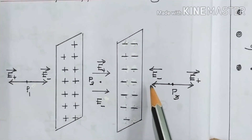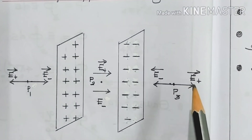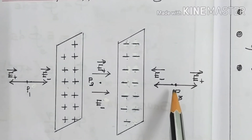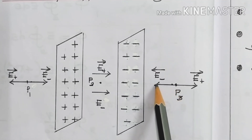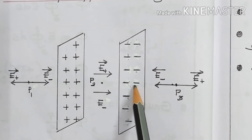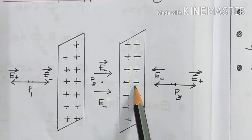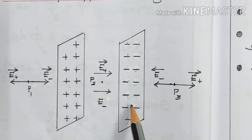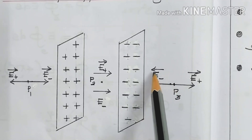Similarly, in the case of P3, the electric field due to the positive sheet is directed away from it in that direction, and the electric field due to the negative sheet is also directing towards the sheet, since it attracts the positive test charge. Electric field lines always come towards the negative sheet, so the electric field at P3 is in this direction, and I have written E-minus vector.